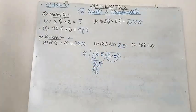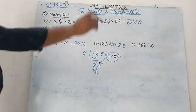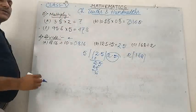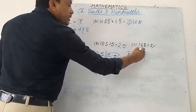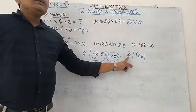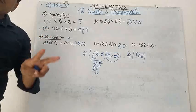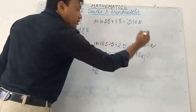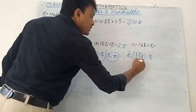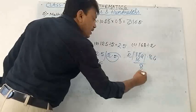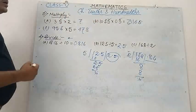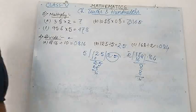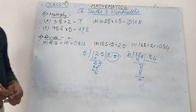Number C: 1.68 divided by 2. Do the division: 1 is less than 2, so we take two digits — 16. But a point comes first, so at first take 1, giving 0 before the point. Then 16 divided by 2 is 8. Bring down 8: 8 divided by 2 is 4. So the result is 0.84. 1.68 divided by 2 equals 0.84.